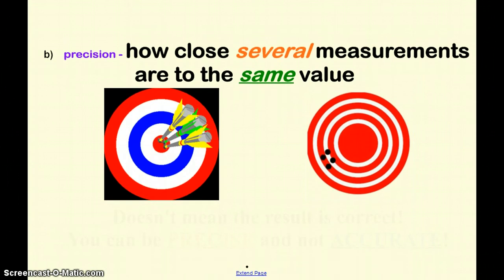Precision on the other hand is looking at kind of like a skill set. How close several measurements are to the same value. Or going back to our dartboard analogy, if someone gives you 10 darts and each time you hit the bullseye, you would be accurate. Repeating that 10 times, that's going to show precision.